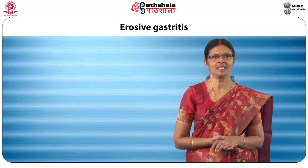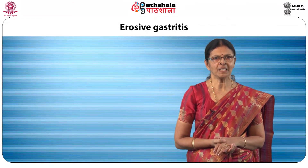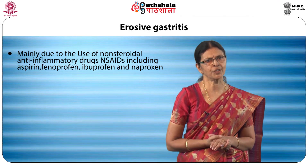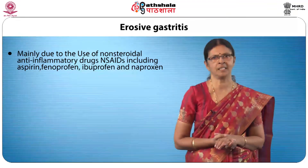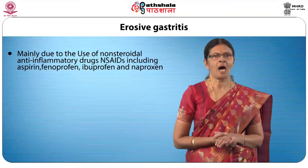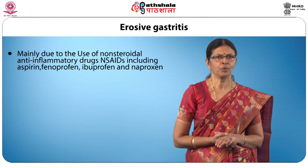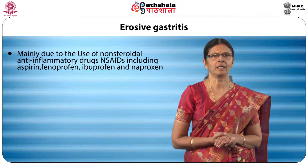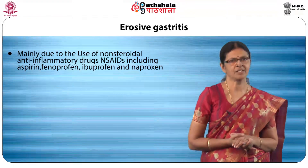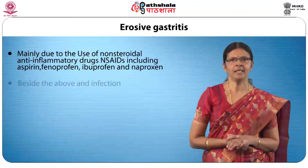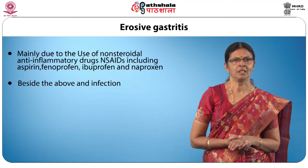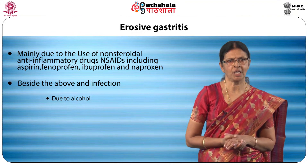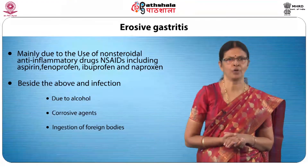Coming to erosive gastritis, use of painkillers — especially non-steroidal anti-inflammatory drugs — is the next common factor for chronic gastritis. Drugs such as aspirin, fenoprofen, ibuprofen, and naproxen used as painkillers are responsible for gastritis and peptic ulcer. Other than infection and drugs, erosive gastritis is also due to alcohol, corrosive agents, and inclusion of foreign bodies.